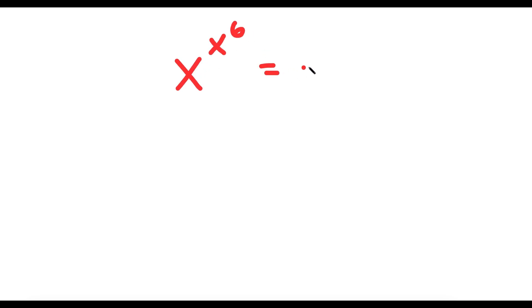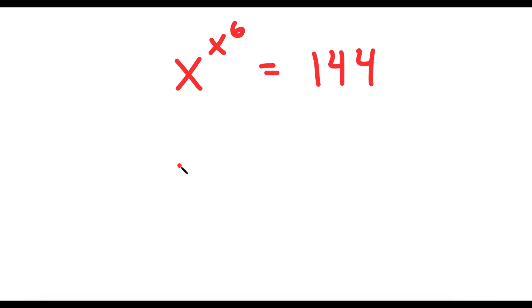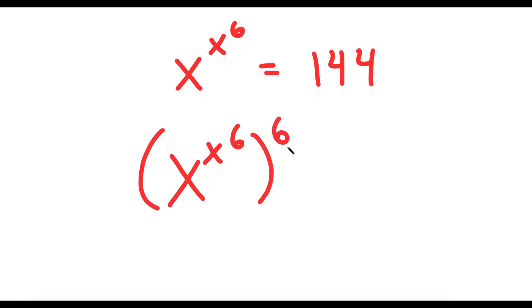In this video, I'm going to be solving the equation x to the power of x to the power of 6 is equal to 144. To solve this, what I'm first going to do is take the power of 6 on both sides. So I get x to the power of x to the power of 6, to the power of 6, is equal to 144 to the power of 6.